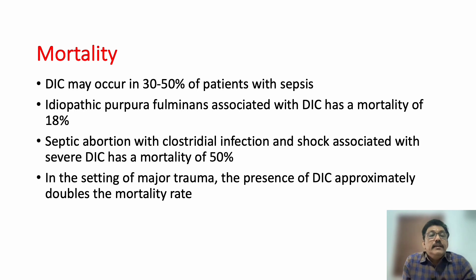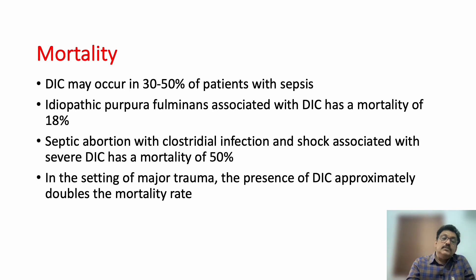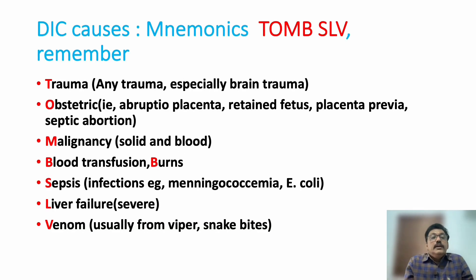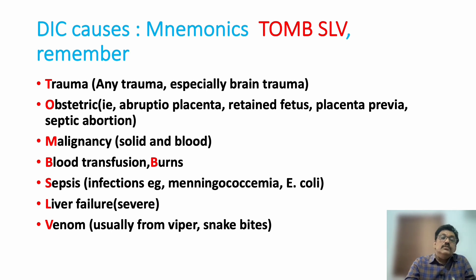Mortality in DIC is very high. In sepsis it can produce 30–50% mortality; idiopathic purpura fulminans has 18% mortality; septic abortions have 50% mortality. You can remember the causes of DIC by the mnemonic TOMSLBV: Trauma, Obstetric causes, Malignancies, Sepsis, Liver failure, Burns, and Venoms (snakebite). The most common cause in the emergency room is always sepsis.